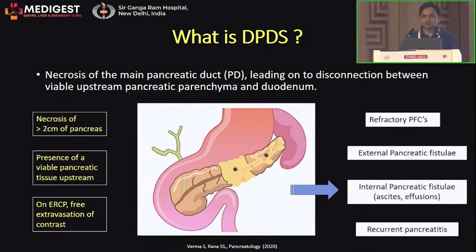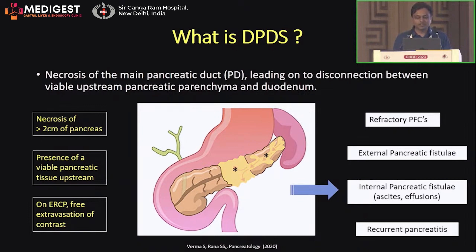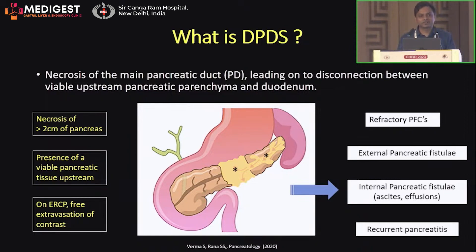The patient either presents with a refractory fluid collection, an external pancreatic fistula if a drain has been placed, internal fistula such as ascites or effusions, or a history of recurrent pancreatitis. These are the situations where you suspect disconnected pancreatic duct syndrome.